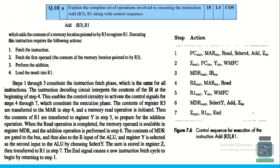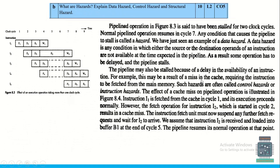To explain the complete set of operations for executing the instruction ADD R3, R1 with control sequence: first fetch the instruction, then fetch the first operand from the memory location pointed to by R3 (indicated by brackets), perform the addition, and load the result into R1. The control sequence is shown with the different set of registers involved.